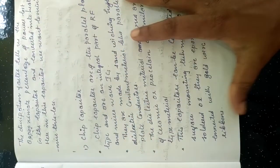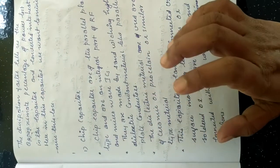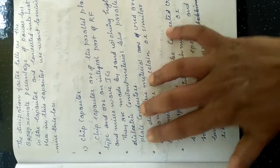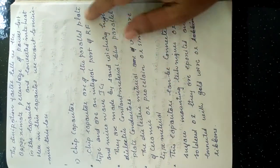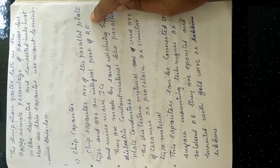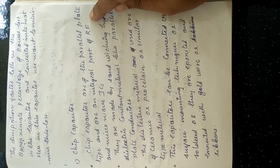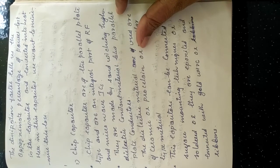Next we are going to discuss about different types of capacitors. The first type is the chip capacitor. This chip capacitor is a parallel plate capacitor and is an integral part of radio frequency and microwave integrators, microwave circuits, and microwave ICs. We always use chip capacitors in high frequency circuits. These are made by sandwiching a high dielectric constant material between parallel plate conductors.